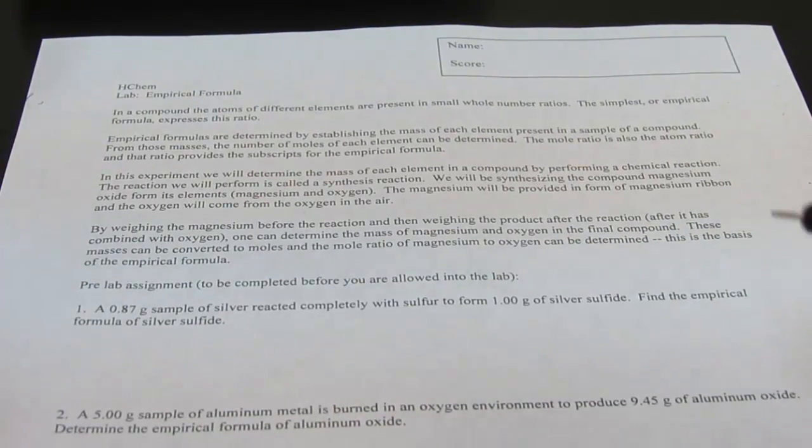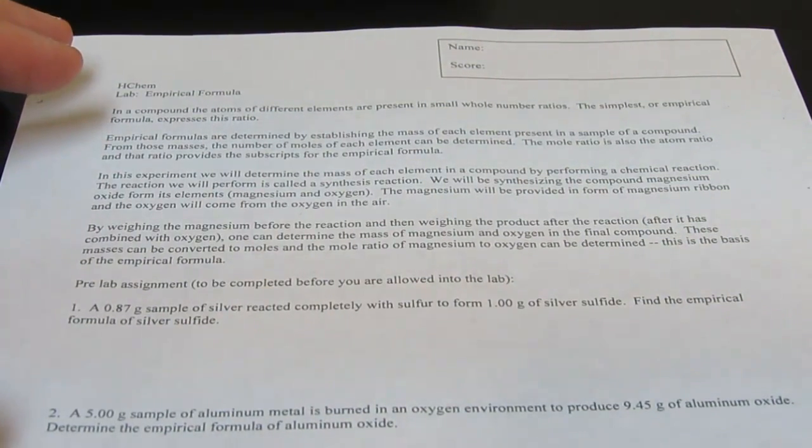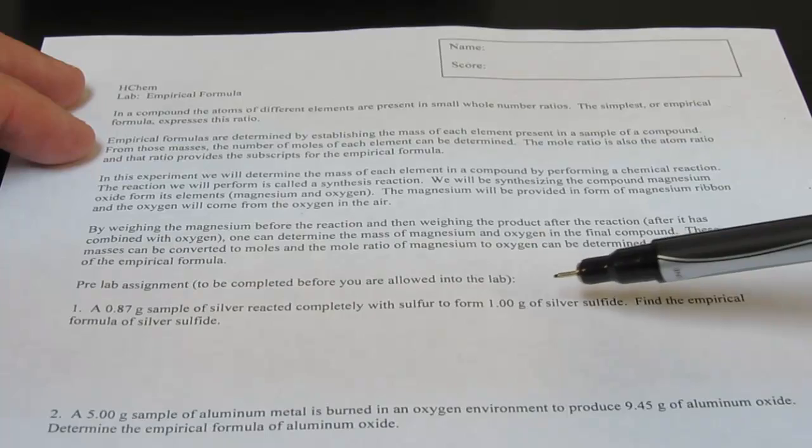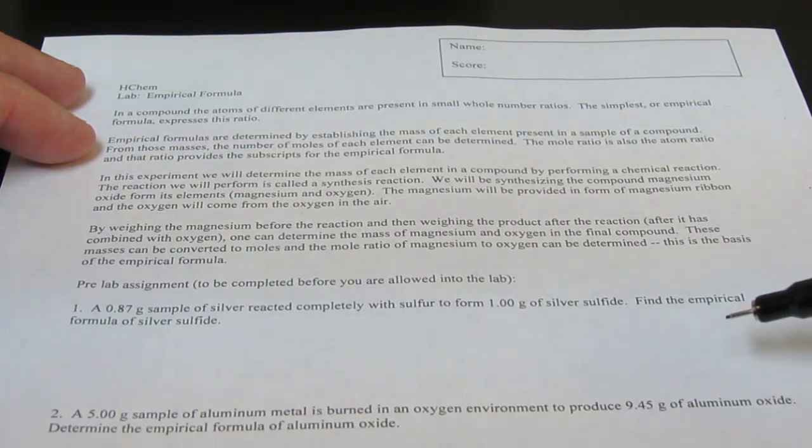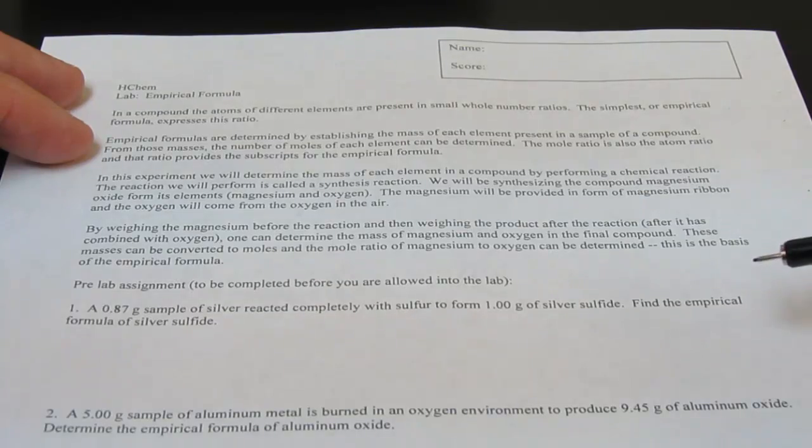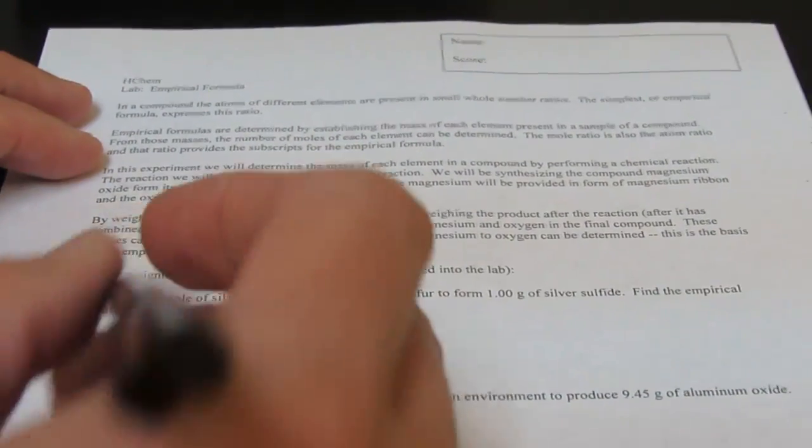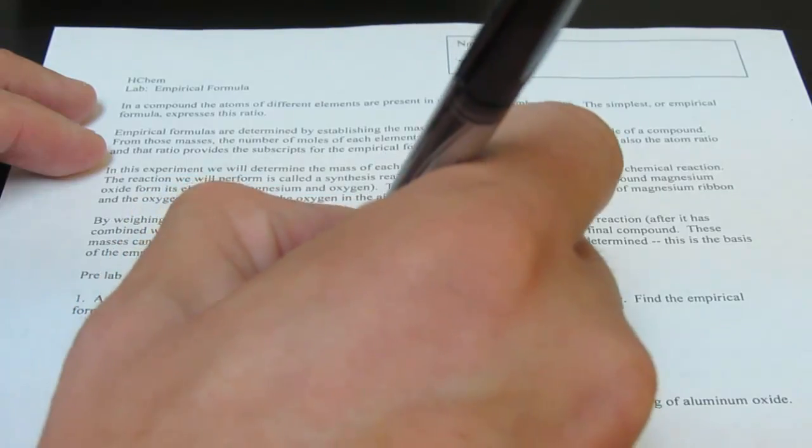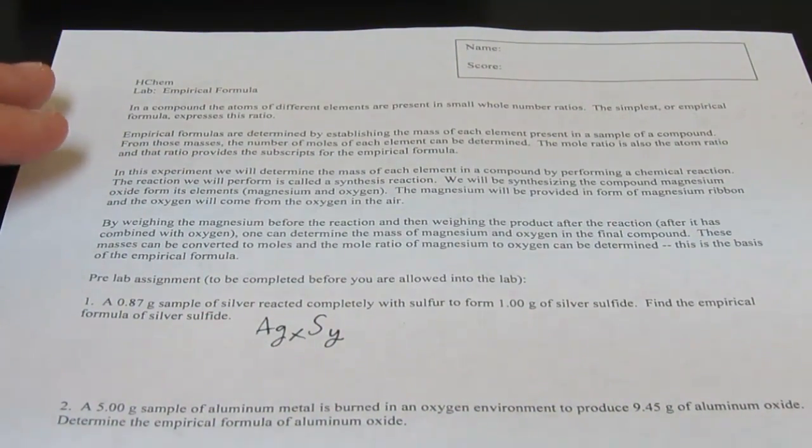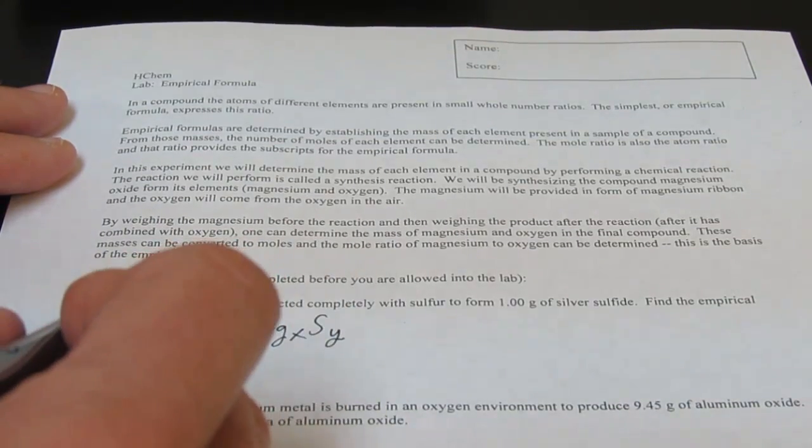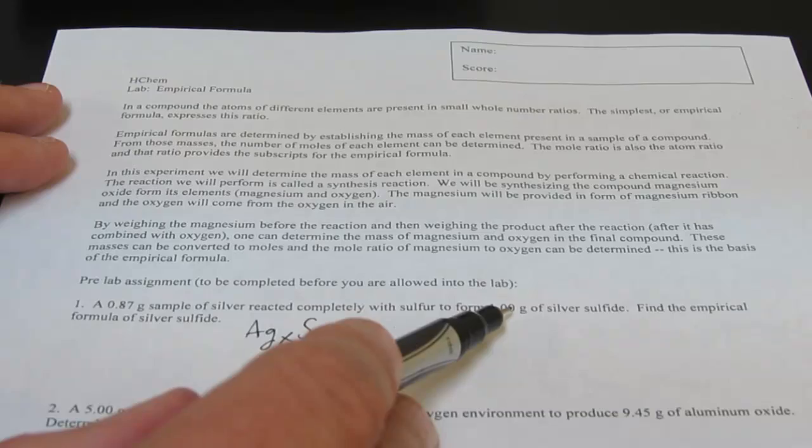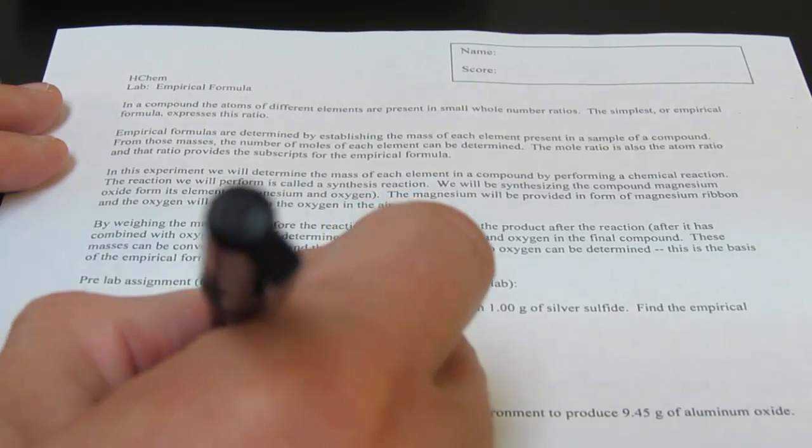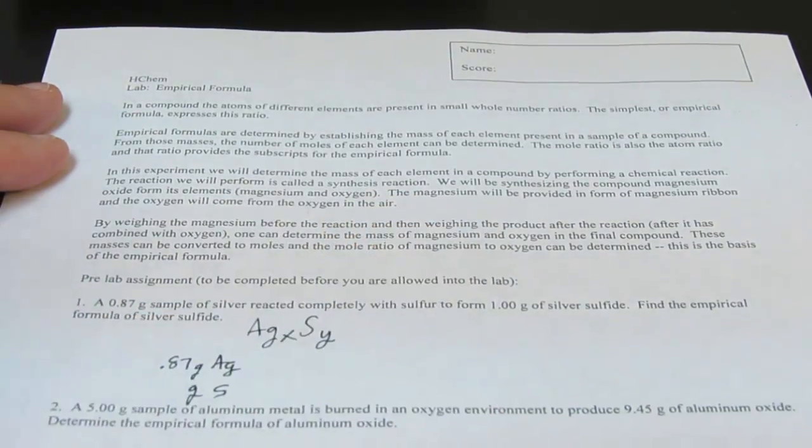Let me help you through example one. This will be very similar to the calculation and the problem you'll be doing in this lab. It says a 0.87 gram sample of silver reacts completely with sulfur to form 1.00 grams of silver sulfide. From this information, we should be able to find the empirical formula for silver sulfide. Now the empirical formula will include silver atoms and sulfur, and we want to find that x to y ratio. So that has to be a mole ratio. We have grams of silver and grams of silver sulfide formed. So I'm going to take my grams of silver, 0.87 grams of silver, and I will find out how many grams of sulfur reacted.